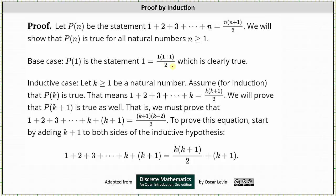And now we consider the inductive case. Let k ≥ 1 be a natural number, and we assume that P(k) is true, where P(k) is the same statement as P(n), except we use k instead of n, which is 1 + 2 + 3 + ... + k = k(k+1)/2.